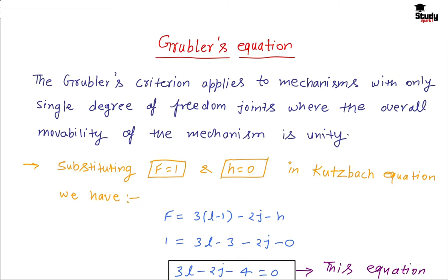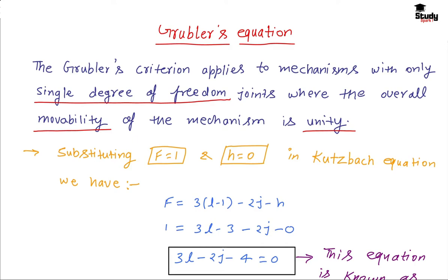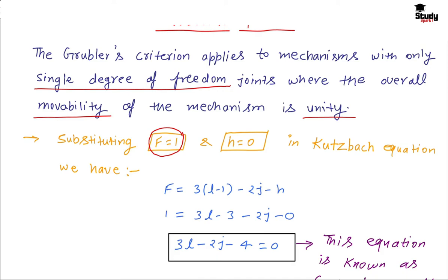Let's start with Gruebler's Criteria. Gruebler's Criteria applies to those mechanisms which have single degree of freedom. We can say that the mechanism which has mobility equal to unity, then Gruebler's Criteria is applicable. That means the mechanism degree of freedom should be 1, the kinematic chain should have 1 DOF and higher pair should be 0.